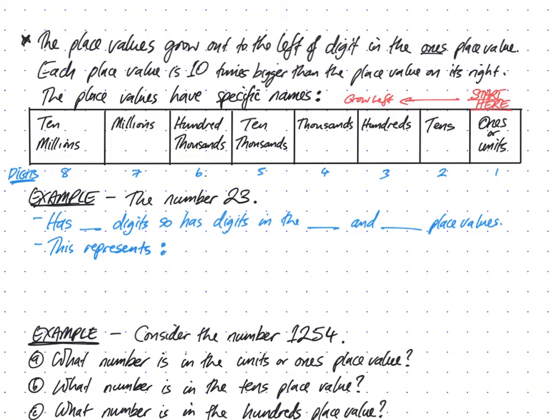Let's do a couple examples to understand place values. Here's the number 23. How many digits does it have? It's got two digits - 2 and 3. The digits grow to the left of the first one, so the rightmost digit is 3. The left digit is 2, in the tens column. So it has digits in the tens and units place values. What does this represent?